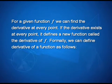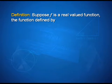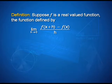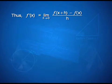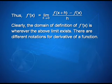For a given function f, we can find the derivative at every point. If the derivative exists at every point, it defines a new function called the derivative of f. Formally, suppose f is a real valued function. The function defined by the limit of f(x+h) minus f(x) divided by h as h tends to 0, wherever the limit exists, is defined to be the derivative of f at x and is denoted by f'(x). This definition of derivative is also called the first principle of derivative. Thus, f'(x) = limit of f(x+h) minus f(x) upon h as h tends to 0. Clearly, the domain of definition of f'(x) is wherever the above limit exists.